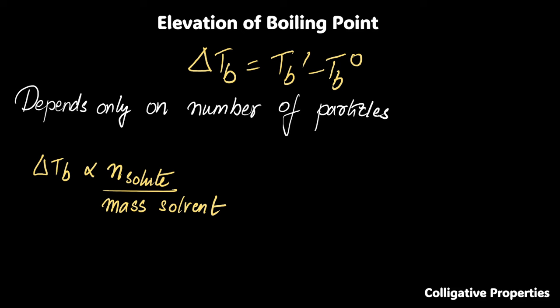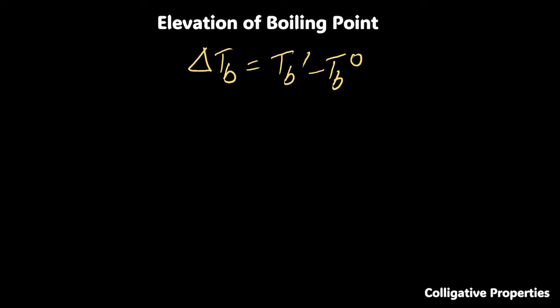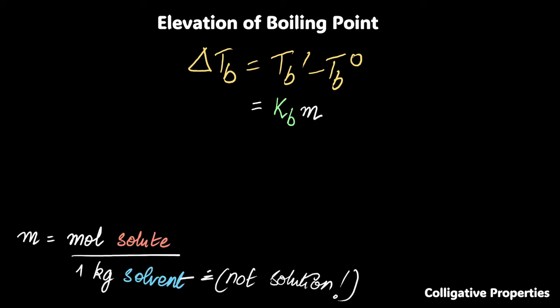Now this delta TB depends on number of particles of what? Of the solute and also the mass of the solvent. Take another statement of fact right now. The number of the solute particles, that's fine. The mass of the solvent is a little beyond the scope of what we are discussing right now. But what is in the scope is think about a concentration term that makes sense over here. Pause the video if you like. Molality with the L. That's what I want to talk about here.